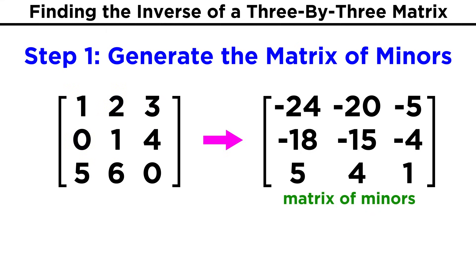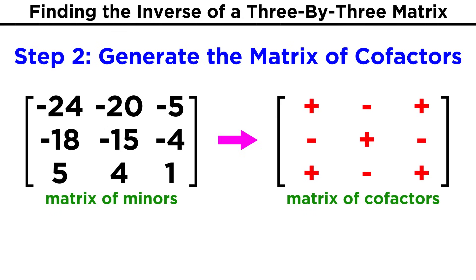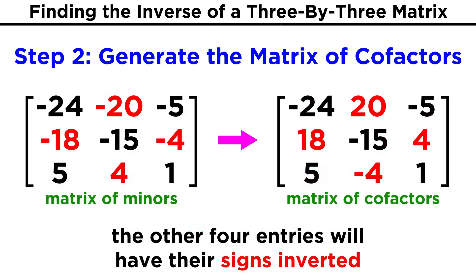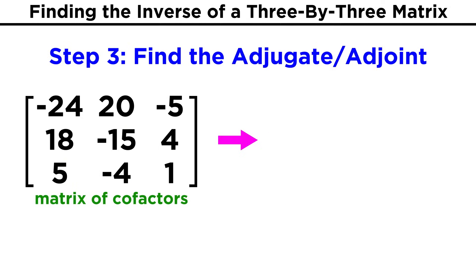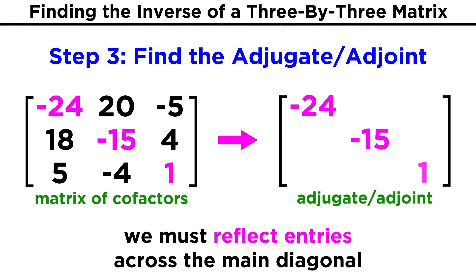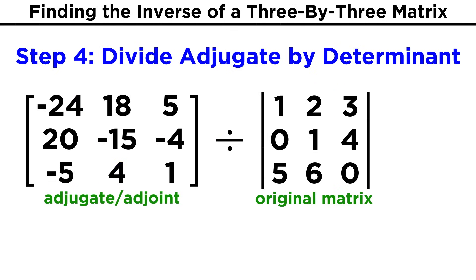Unfortunately, that was just step one. Now for step two, we use our matrix of minors to generate a matrix of cofactors. We just have to apply a checkerboard of plus and minuses to get the right sign on each term. The corner entries and the central entry will remain as they are, and the other four entries will have their signs inverted. Then step three is to find the adjugate, or the adjoint. This involves reflecting all the entries across the diagonal. The diagonal stays as it is, but the other terms are reflected. Finally, the last step involves dividing by the determinant of the whole original three by three matrix.